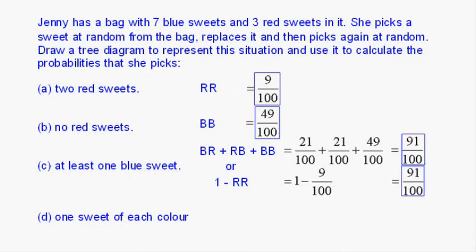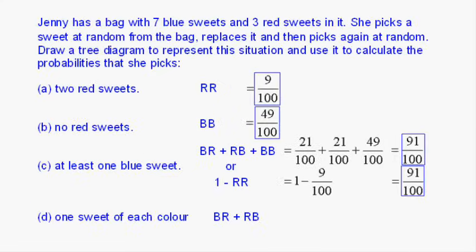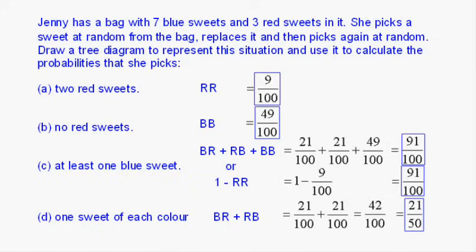Now, what about the last one? One sweet of each colour. Well, that's just the two middle branches. First blue, then red, or first red, then blue. So it's this or this, so we add those two probabilities together. Blue-red plus red-blue. 21 hundredths plus 21 hundredths. 42 hundredths, which we may choose to simplify to 21 fiftieths.